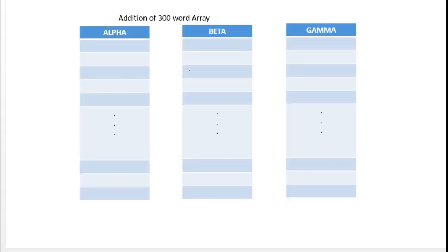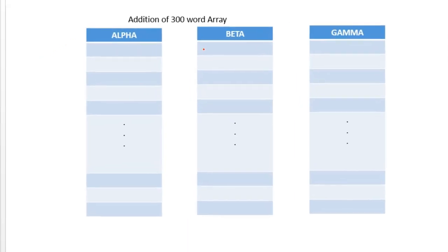This is the third program in SIC-XE. The variables alpha, beta, and gamma are all arrays of 100 words. The objective of the program is to perform word-by-word array addition and store the result in gamma. The job of the loop is to add together the corresponding elements of alpha with beta and store the result in gamma.